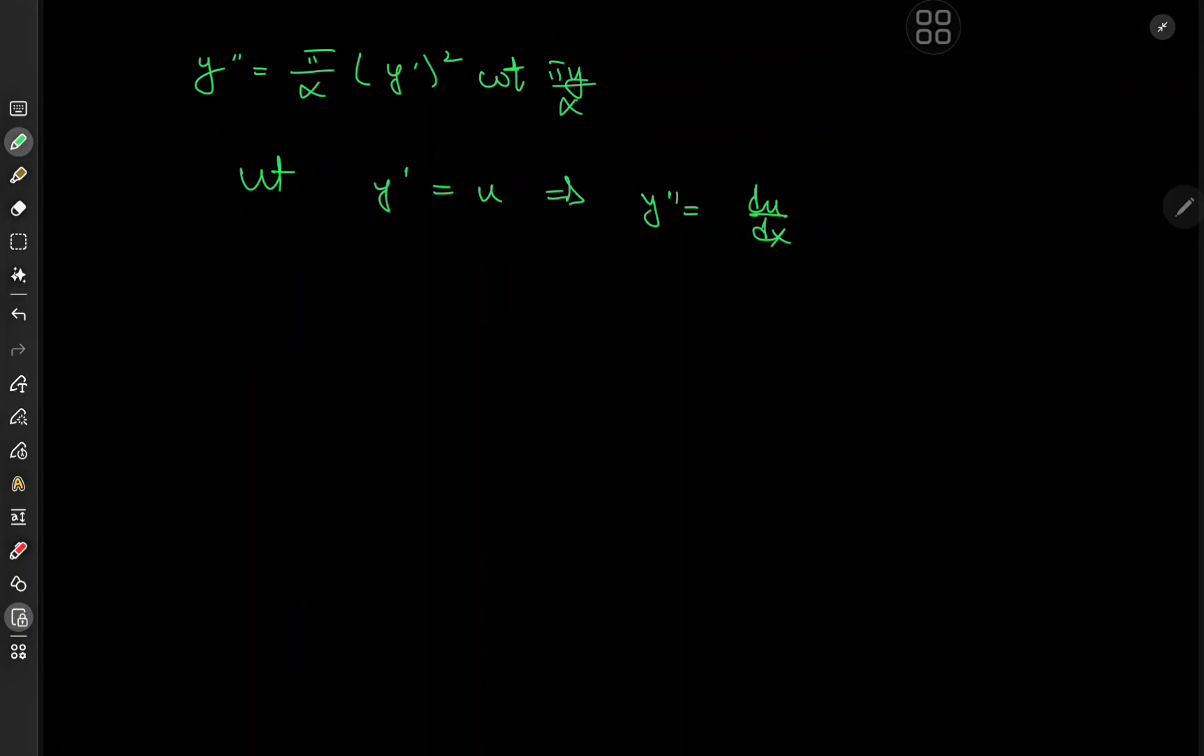If you take note, this transforms your differential equation into an equation in three variables x, y, and u, which is kind of nasty. So we'll write this as du over dy times dy over dx via the chain rule, and dy over dx is u. So we have u times du over dy, and that is our y double prime, and this is our y prime term, and that considerably simplifies our differential equation.